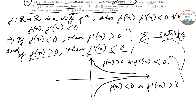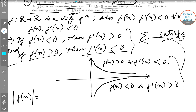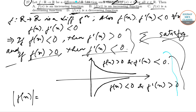In both cases, if we take mod of f(x), the curve transforms such that |f(x)| is always greater than or equal to 0, and it is strictly decreasing. This implies that |f(x)| is a strictly decreasing function, which corresponds to option D, the correct answer.